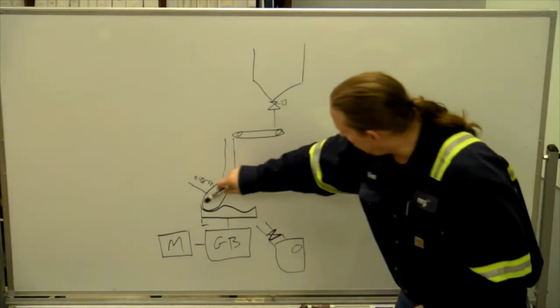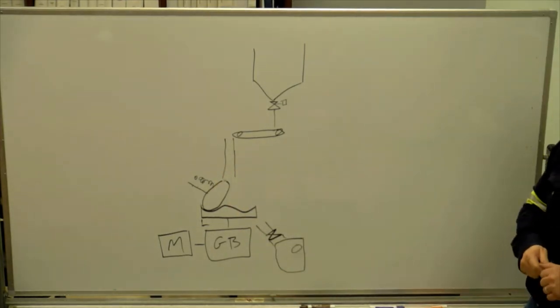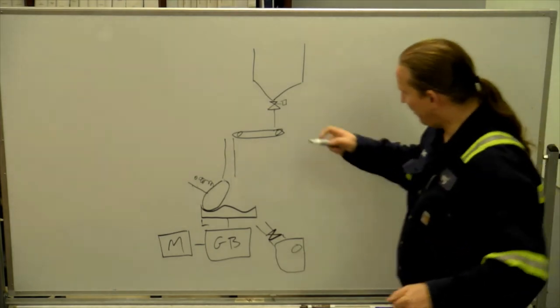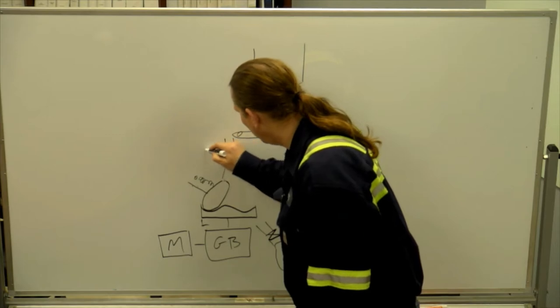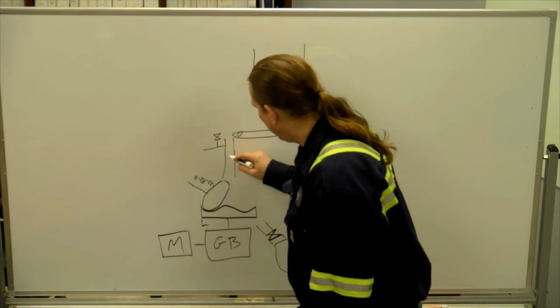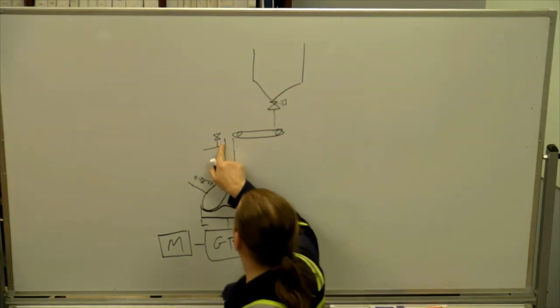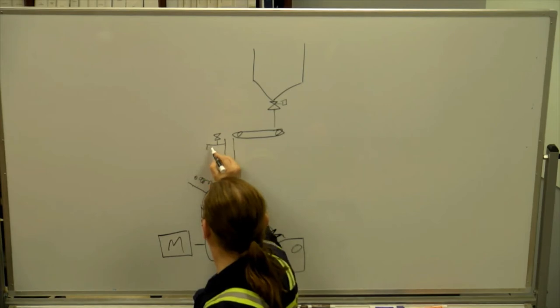Alright, so we grind up the coal and then where does it go? Up. Up is a good answer. So we are trying to go up. My answer was going to be to the burner, but you're right, before it goes to the burner, it has to go through the classifier.